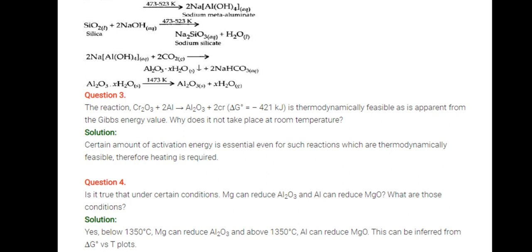The reaction Cr2O3 plus 2 Al forms Al2O3 plus 2 Cr, with delta G° value minus 421 kJ, is thermodynamically feasible as it is apparent from the Gibbs free energy value. Why does it not take place at room temperature? A certain amount of activation energy is essential even for such reactions which are thermodynamically feasible. Therefore, heating is required.